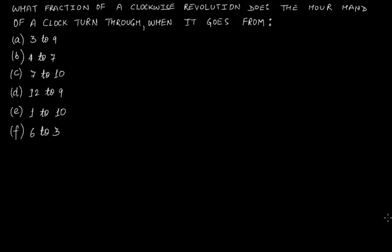What fraction of a clockwise revolution does the hour hand of a clock turn through when it goes from various positions? For those who haven't watched the previous series of videos related to this topic, the theory has been discussed there. Please go to the playlist and watch those videos first to understand this question properly. For those who have, let's begin.